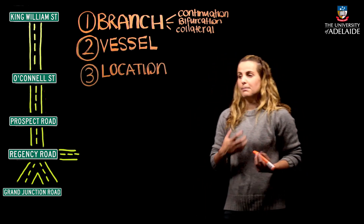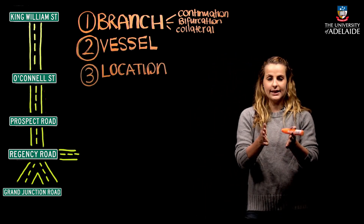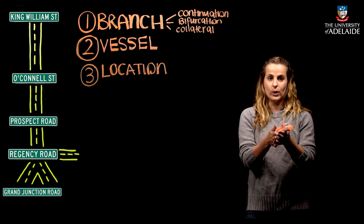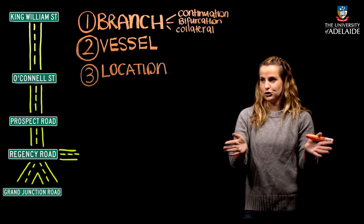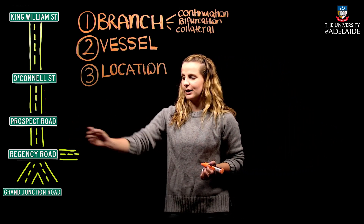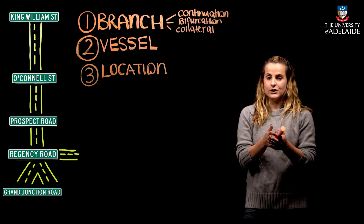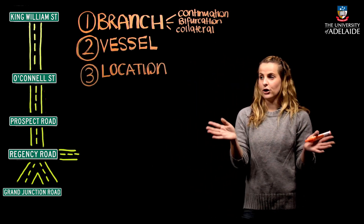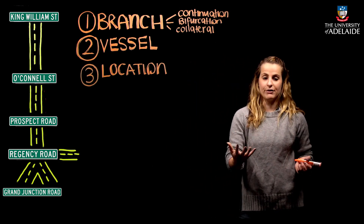When we have a bifurcation, by definition it is when you have one segment split or branch into two. Where Prospect Road terminates into left and right on Grand Junction Road is going to be a bifurcation.